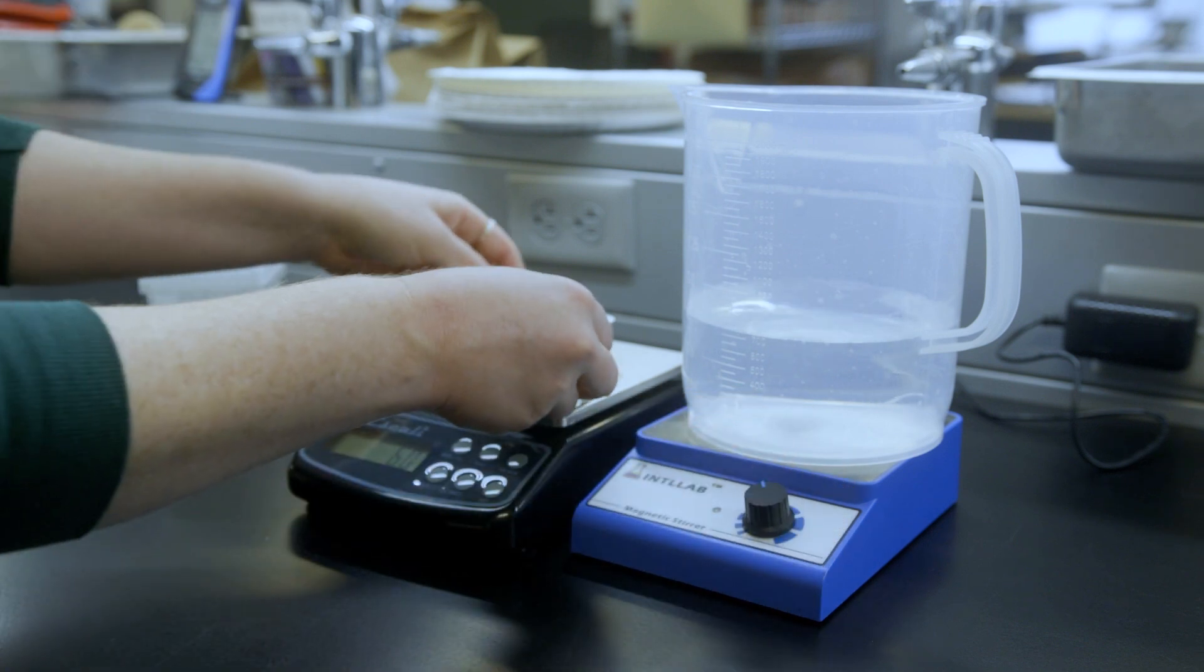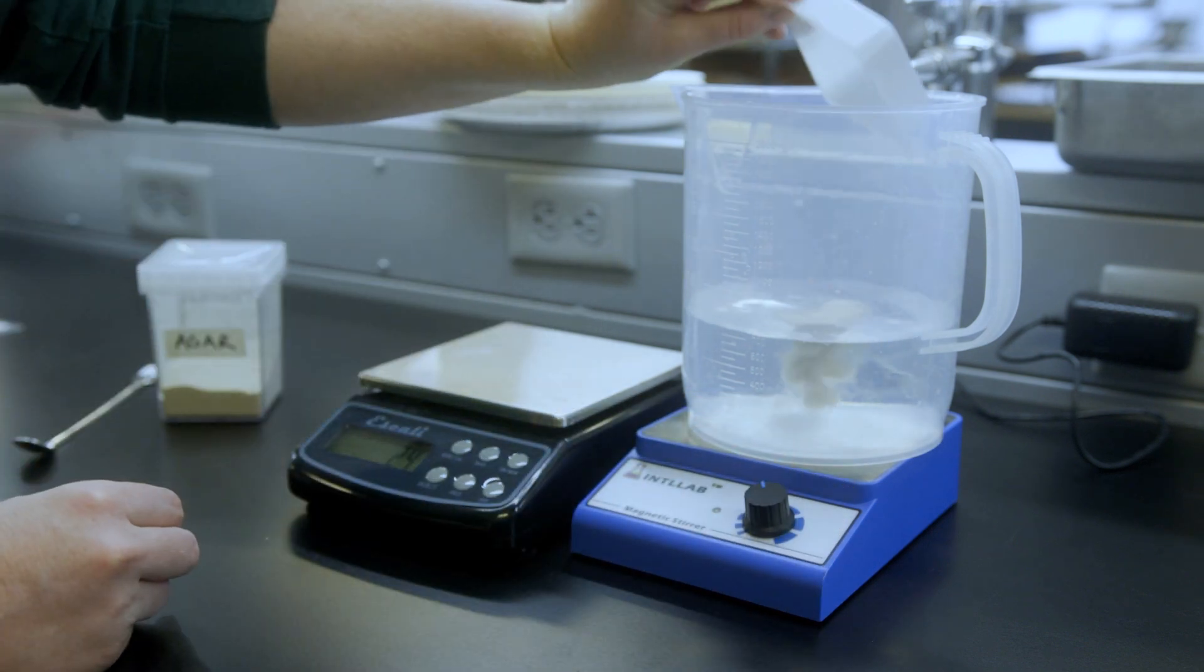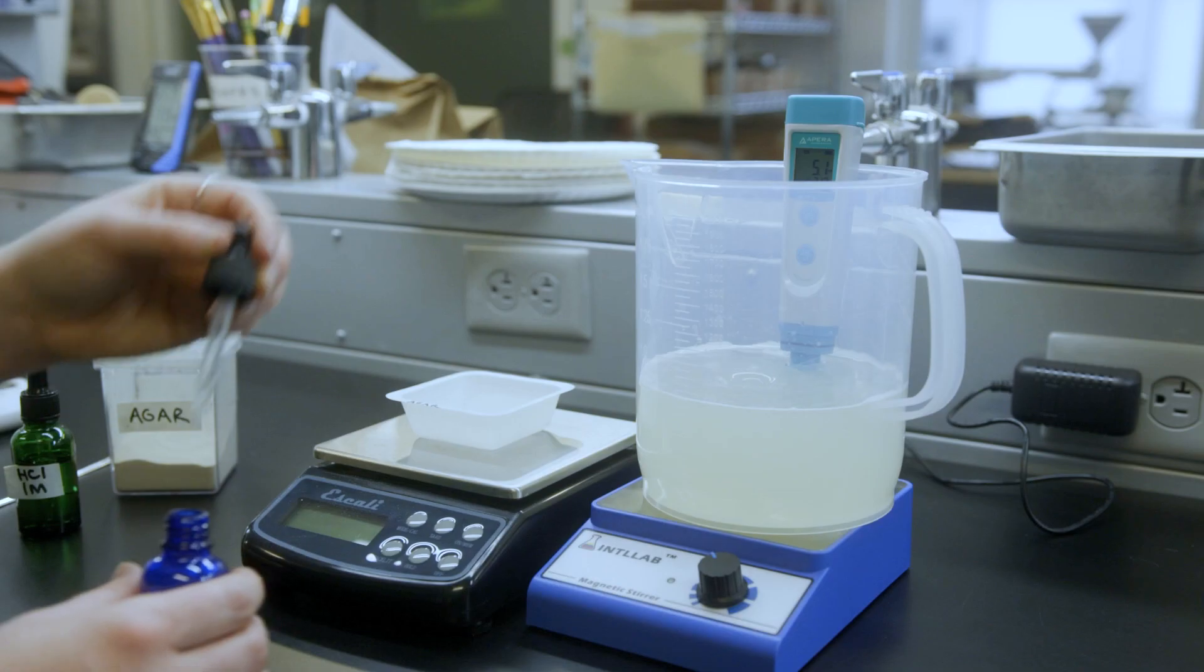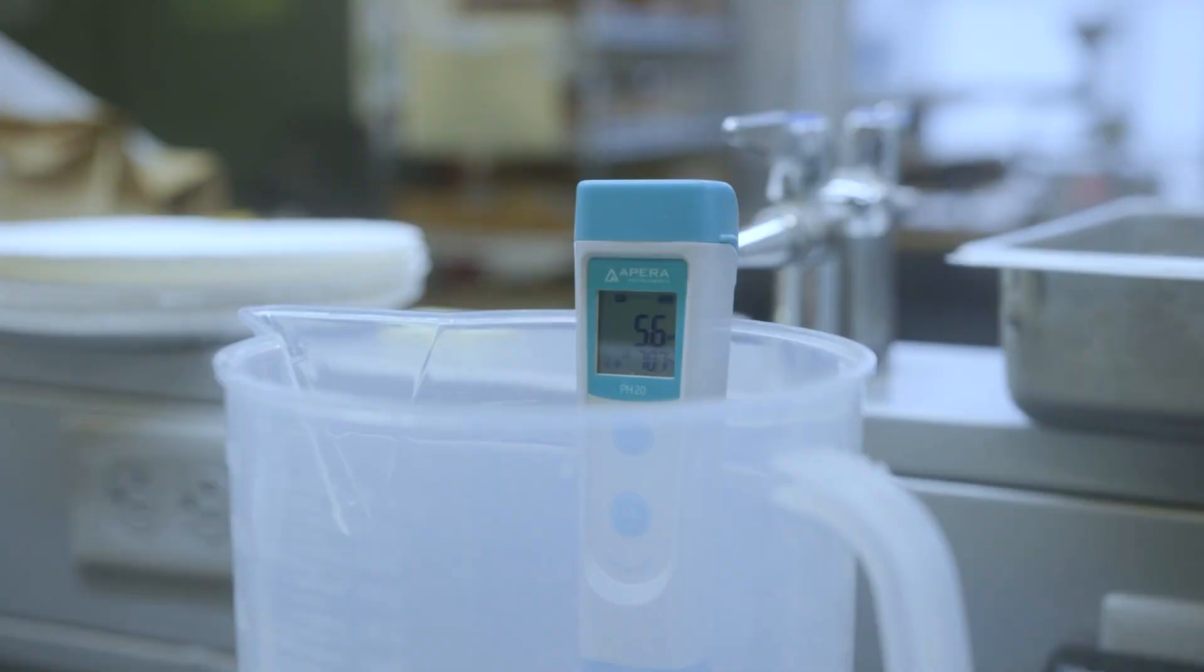The appropriate amount of agar is then added to water on a stir plate for the concentration needed. PPM is added and then pH is adjusted between 5.6 and 5.8.